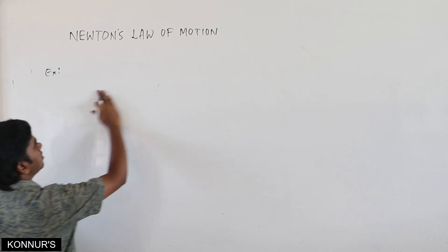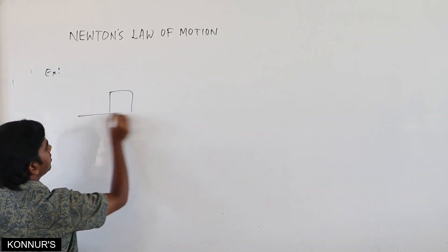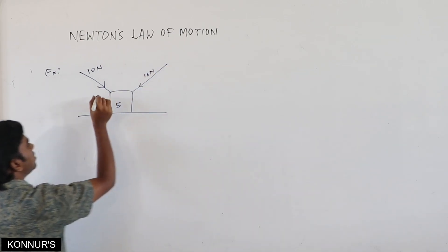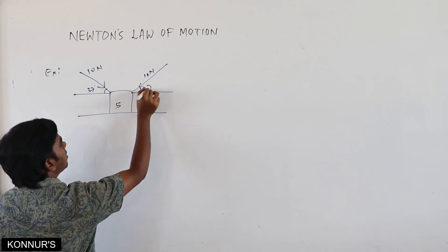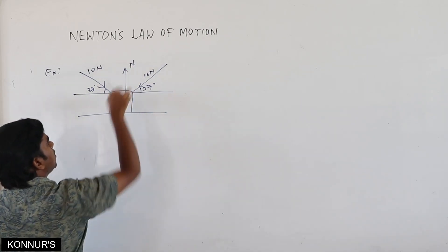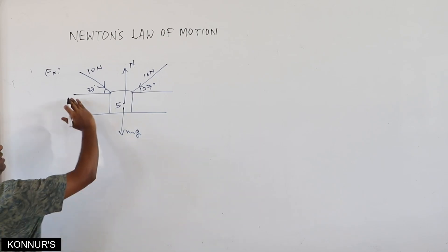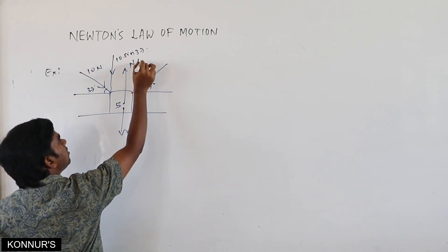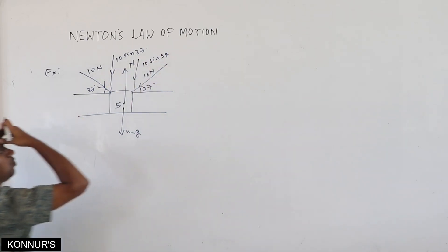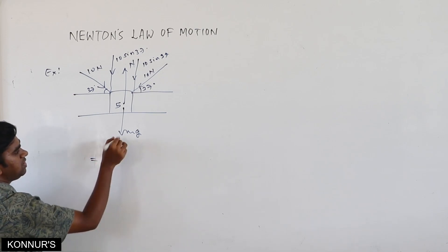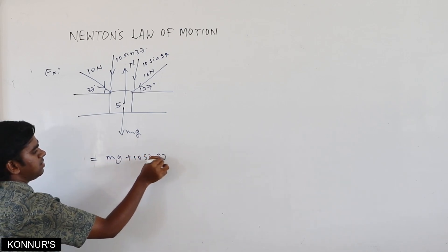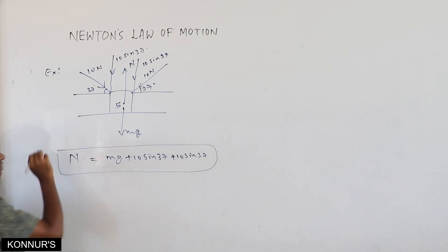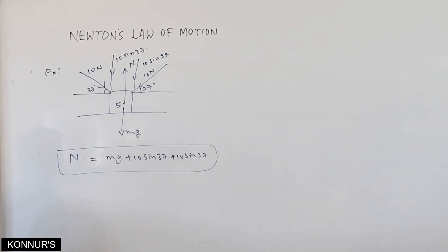Another example: body of mass 5 kg with two forces of 10 N each, both at 37 degrees — one from each side. Each force has a downward component of 10·sin 37. Net downward force is Mg plus 10·sin 37 plus 10·sin 37, so normal increases because two forces are acting on the body.